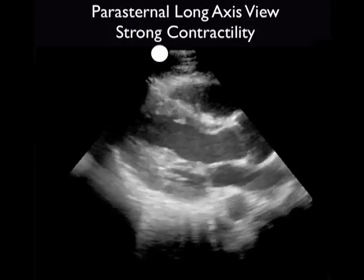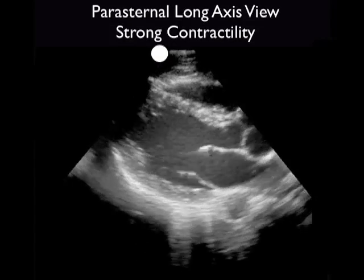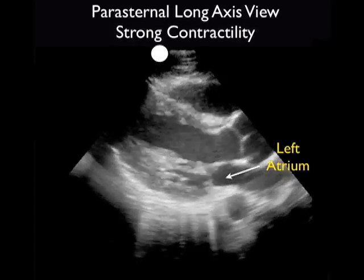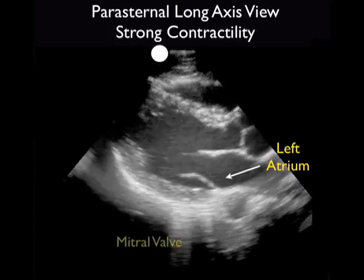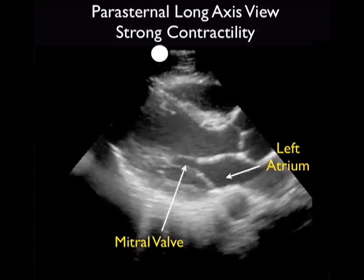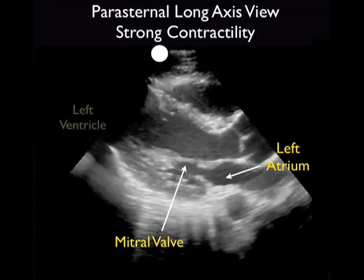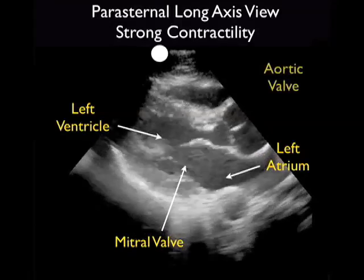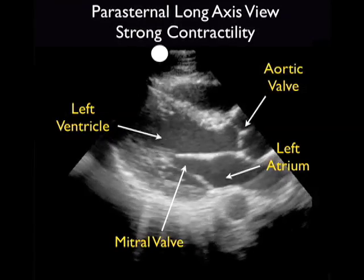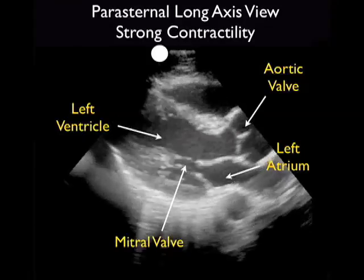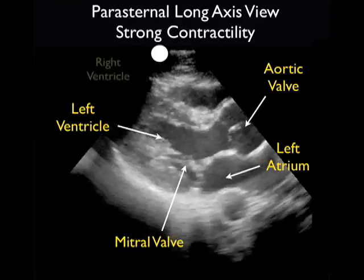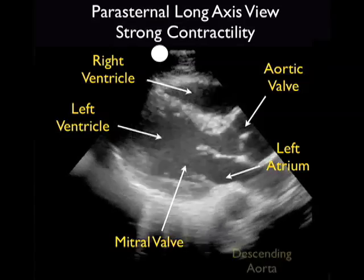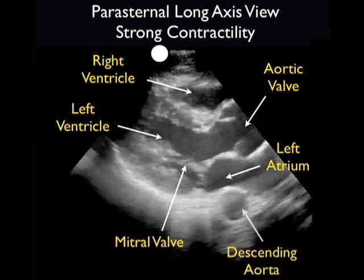Here's a video clip showing excellent contractility of the left ventricle as taken from a medical student triathlete. Recall the chambers of the heart from the parasternal long axis plane: the left atrium in a posterior location, the mitral valve just to the left of the left atrium, and the left ventricle with its hypertrophic walls. Notice the strong contractility as the endocardial walls almost meet during systole. We also see the aortic valve to the right of the left ventricle and the right ventricle in a superficial location above the left ventricle.